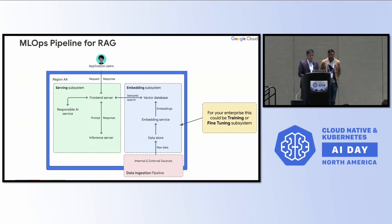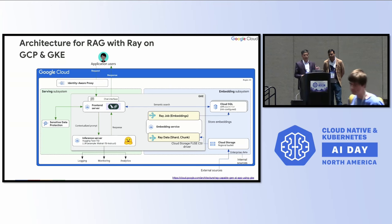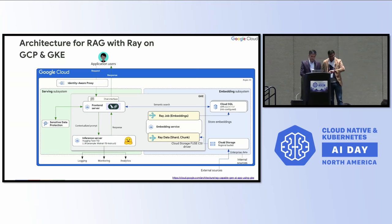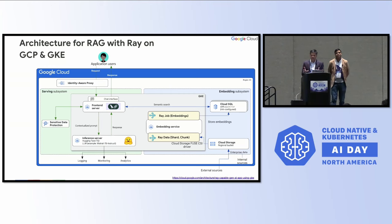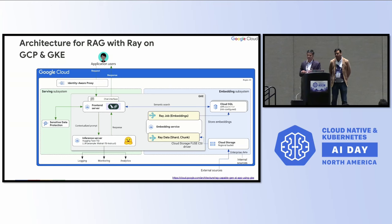We took this MLOps application architecture and tried it with another platform called Ray, deploying Ray on GKE and GCP stack. GKE also has a managed operator for running Ray. On the right side — the embedding subsystem — it starts with cloud storage, your dataset on which the RAG will be grounded. The embedding system is implemented using Ray data pipelines for chunking and sharding the data, read from the cloud storage bucket. The Ray job is submitted to embed those chunks using the embedding model and store the embeddings into the PG vector database on Cloud SQL.